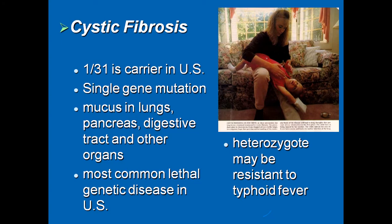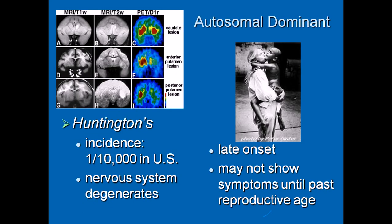Cystic fibrosis happens in one in every 31 carriers in the U.S. and is probably the most common genetic disorder. A single gene mutation causes this effect. It causes the production of a huge amount of mucus in different internal organs like the lungs, pancreas, digestive tract, and other organs. Due to this excessive mucus, individuals have problems breathing, digesting food, and many other bodily functions. Heterozygotes may be resistant to typhoid fever, but that's not a good trade-off. It is the most common lethal genetic disease in the U.S.